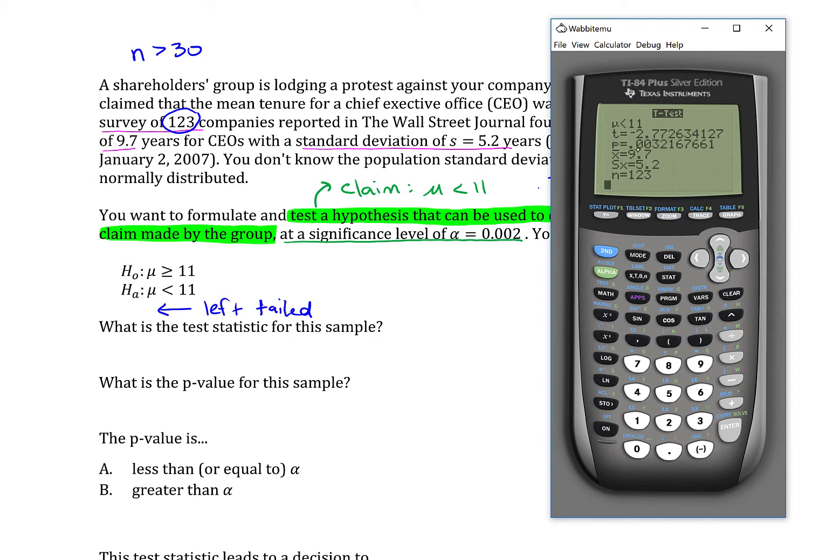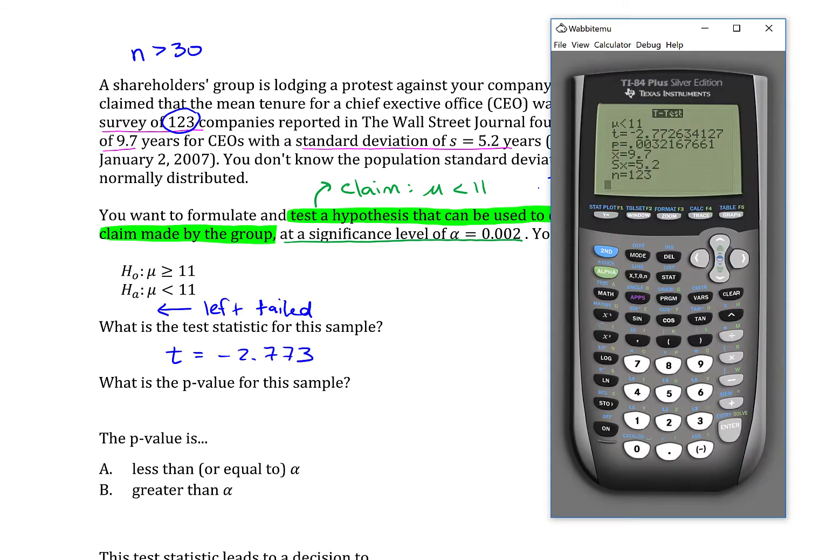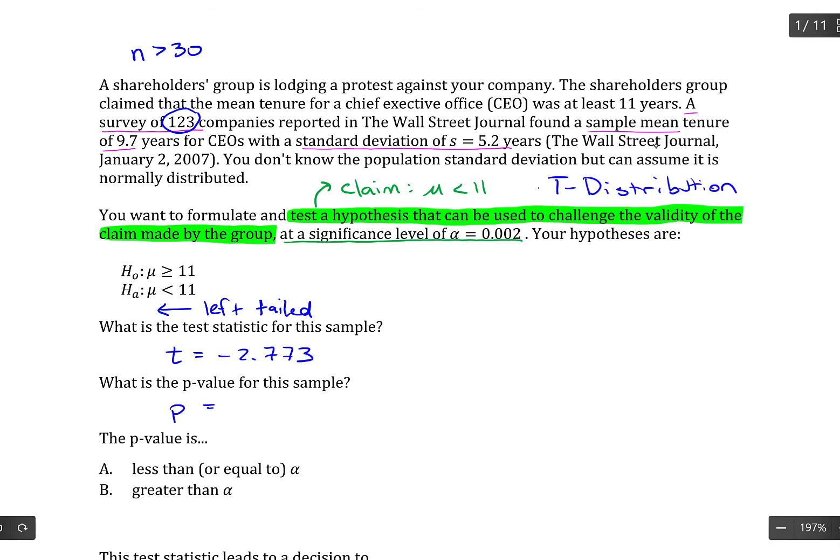And we come up with a few different items here. So T is the test statistic. So T is negative 2.773. The p-value is 0.0032. And I'm just choosing some decimals here, but of course, follow the rounding rules in the problem.